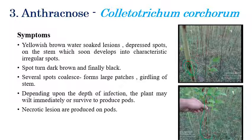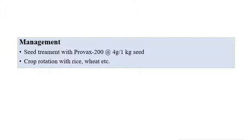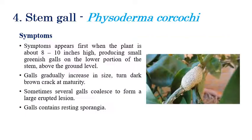Several spots appear in the stem region, and when coalescing they produce large patches and girdling of the stem. In severe stages, necrotic lesions are produced and the entire plant may die, causing significant economic losses for farmers. For management, seed treatment with Provaxin 200 at 4 grams per kilogram of seeds is recommended, along with crop rotation with rice and wheat.